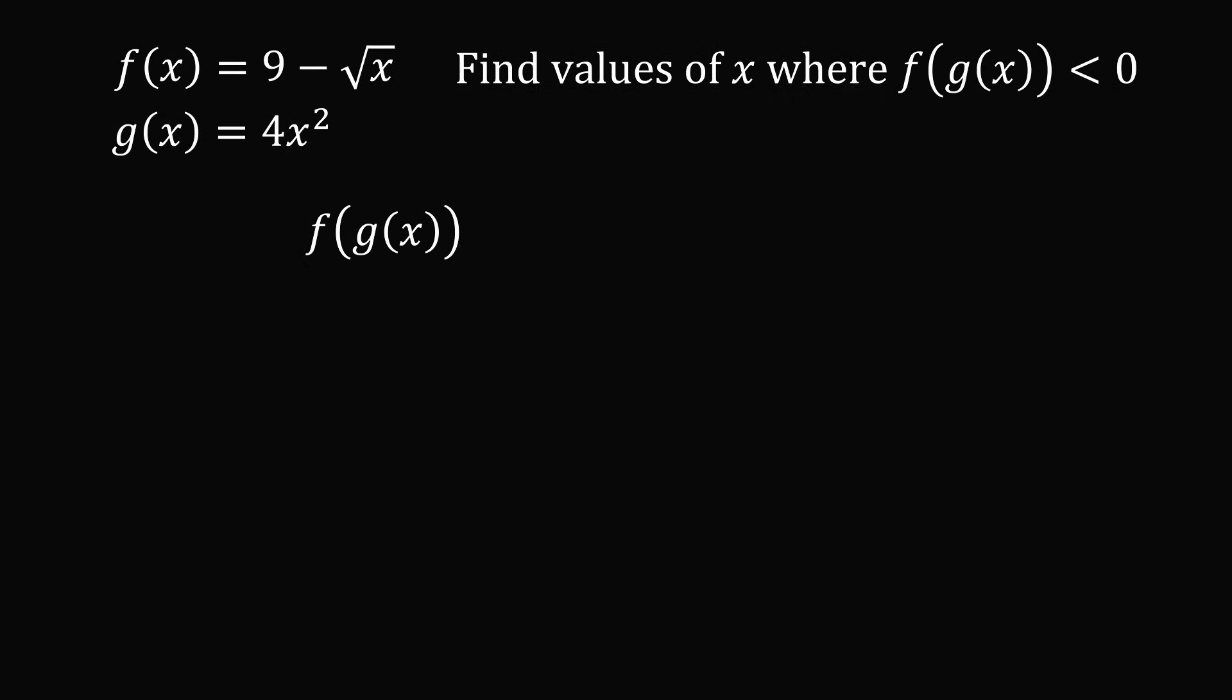So in this case we want to apply the function g first. So g of x is equal to 4x squared. So we change the g of x to be 4x squared. So now we have f of 4x squared. So if 4x squared is the input wherever we see x in f of x we want to replace that with 4x squared. So this will work out to be 9 minus the square root of the quantity 4x squared.